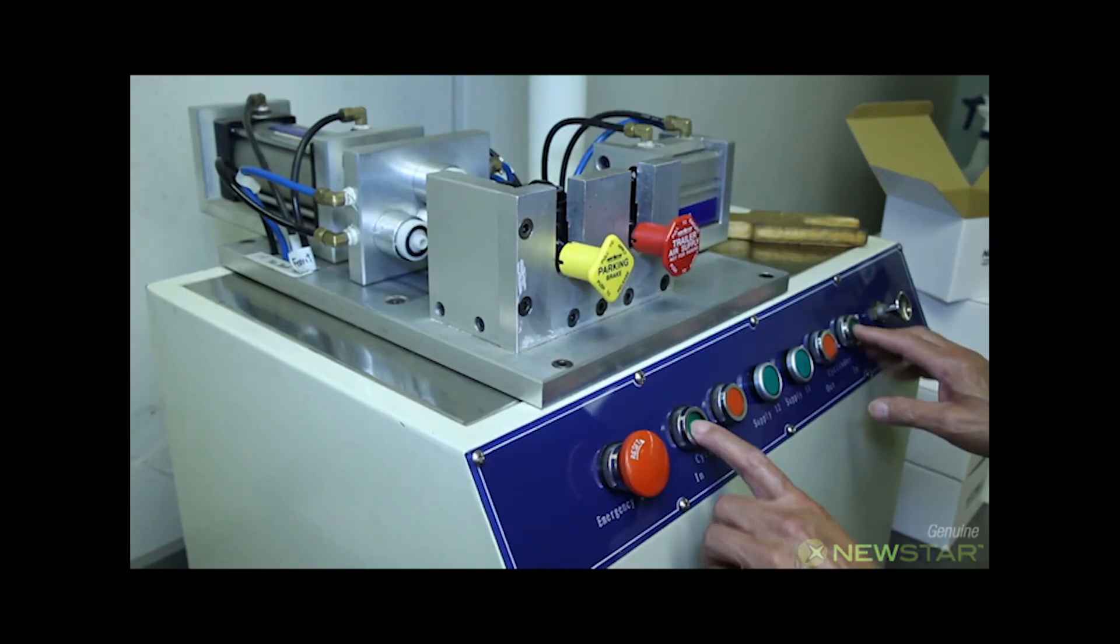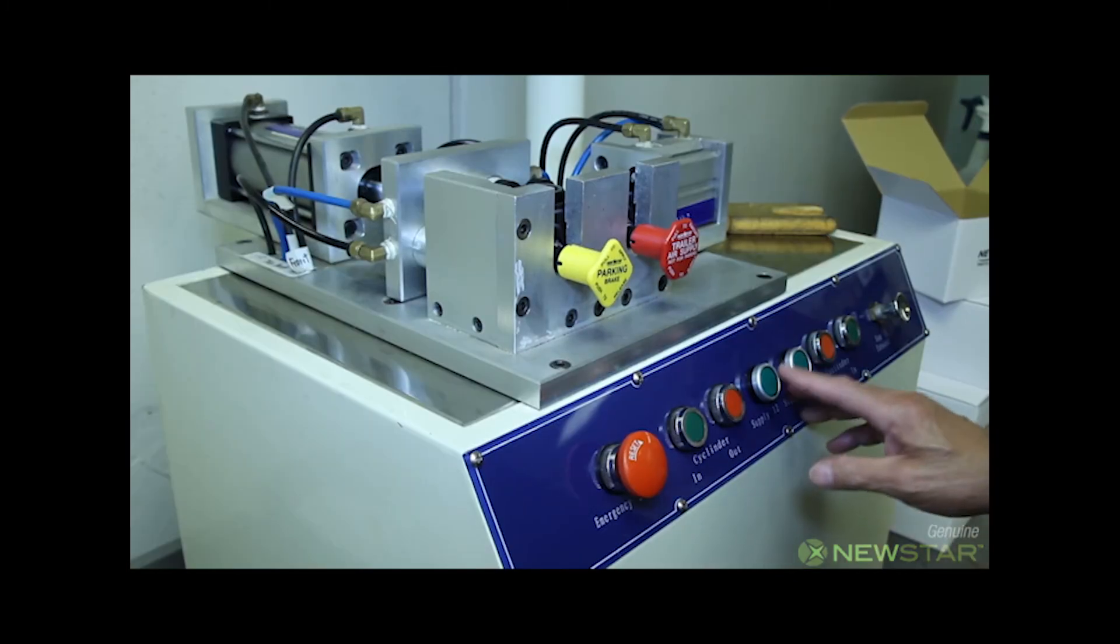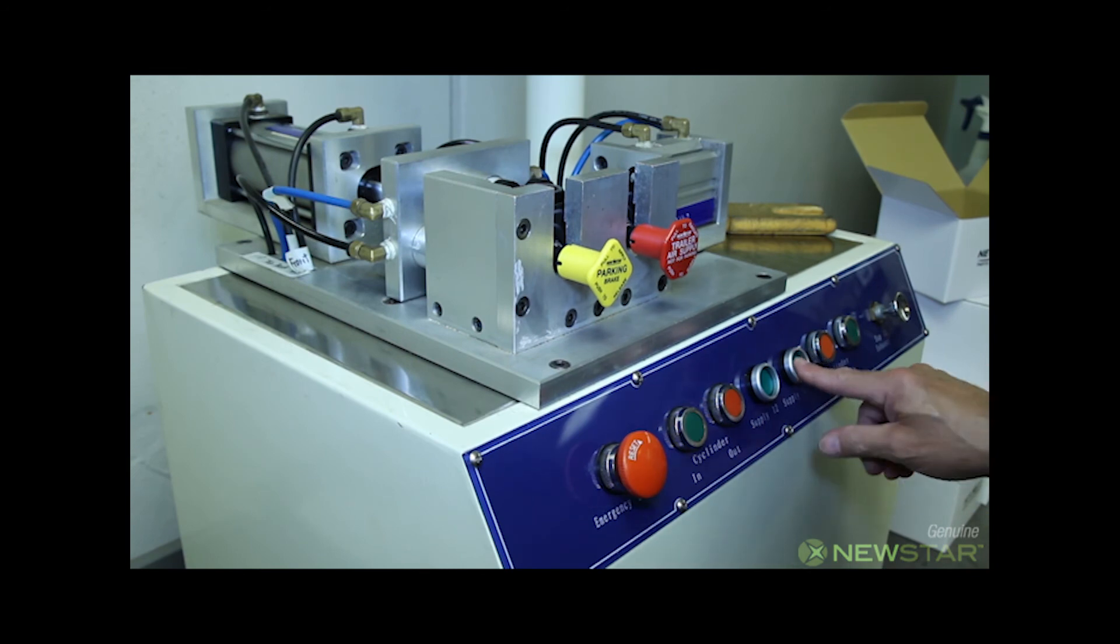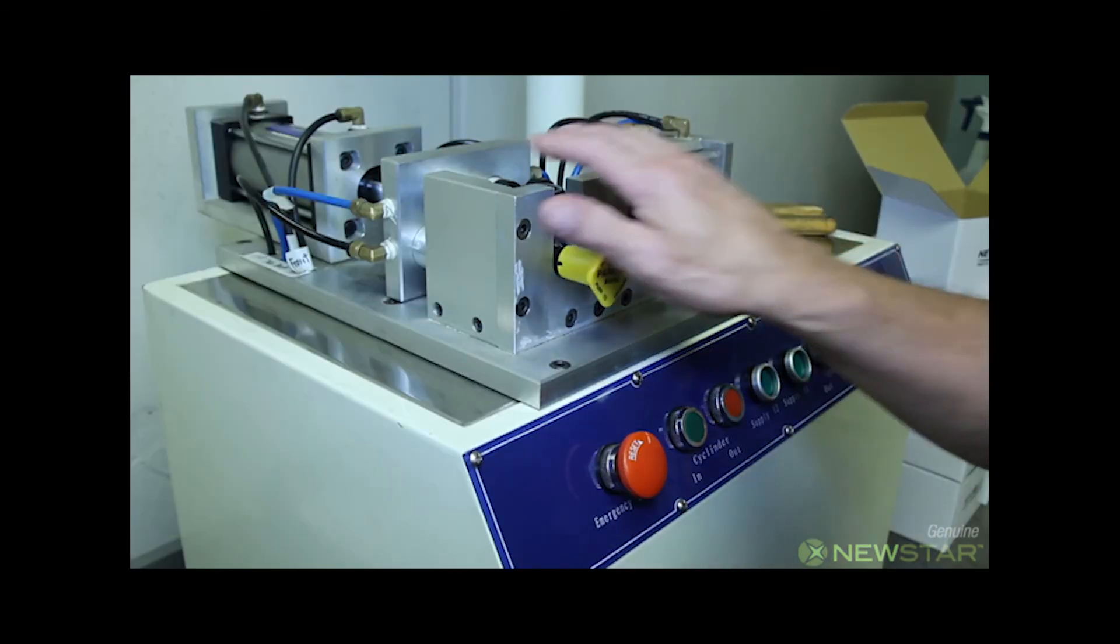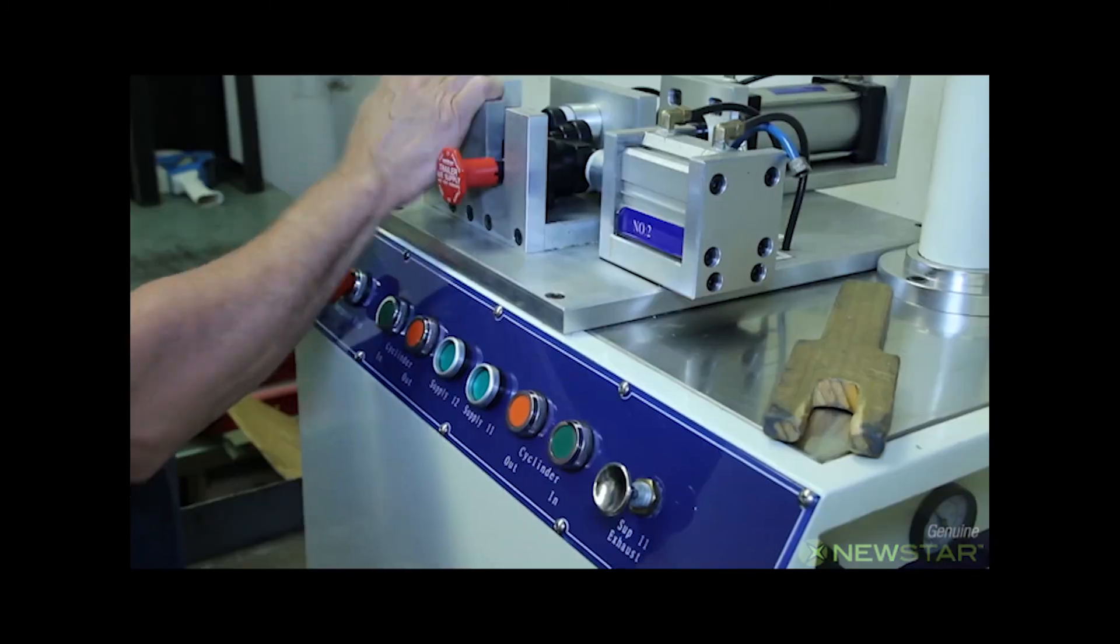Here we are testing a manifold dash control valve. Tractor and trailer supply pressures are built up. Tractor supply pressure is activated first, then trailer supply pressure.